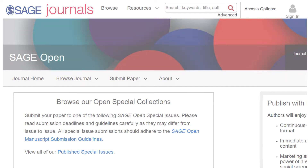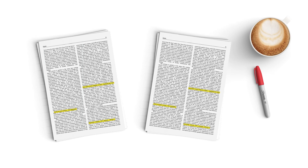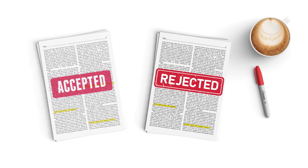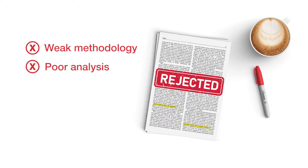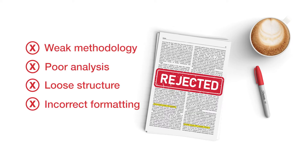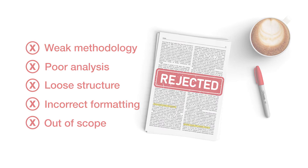What happens next? After you've submitted your paper for consideration, in most cases editors will either accept or reject it. Some reasons for rejection include weak methodology, poor analysis, loose structure, and incorrect formatting. The article could even be out of scope.